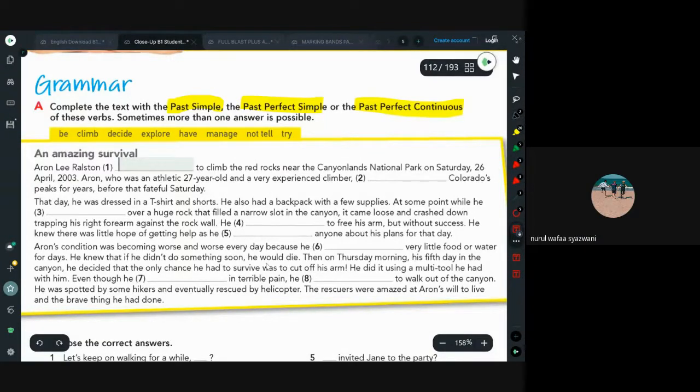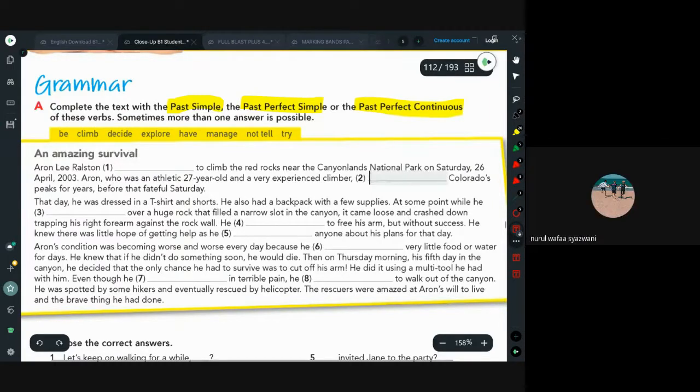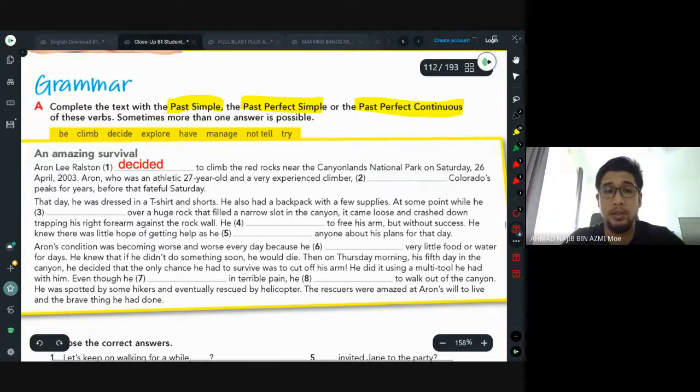Aaron Lee Ralston decided to climb the red rocks near the Canyonlands National Park on Saturday, 26 April 2003. Aaron, who was an athletic 27-year-old and a very experienced climber, had been climbing Colorado's peaks for years before that fateful Saturday. Yes, had been climbing.